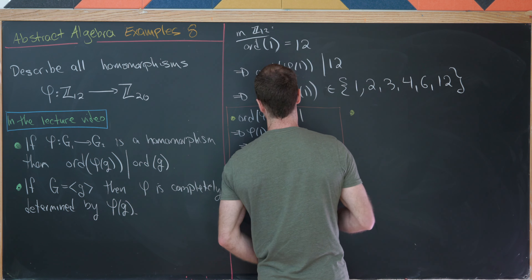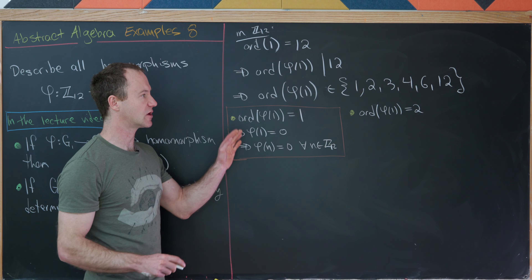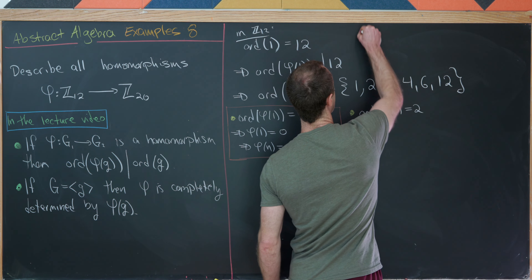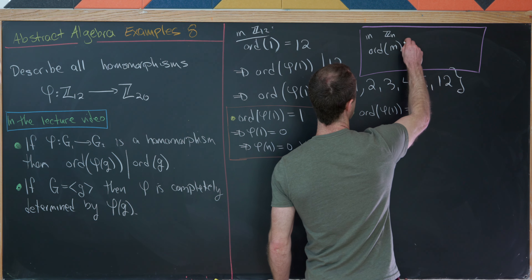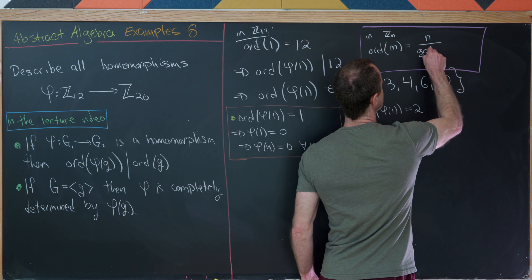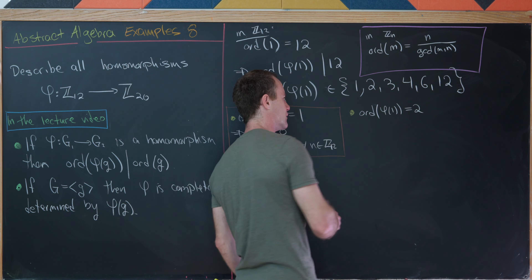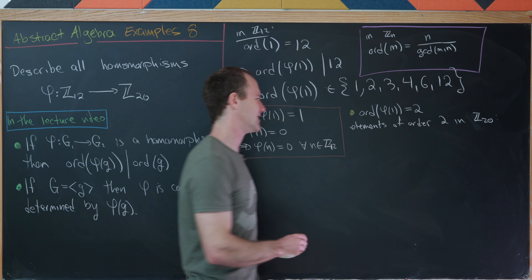Now let's look at the next case: what happens if the order of φ(1) equals 2. We need to look for elements of order 2 inside of Z20. Recall that in Zn, the order of the number m equals n divided by GCD(m, n). That means we can find elements of order 2 in Z20 using this formula. We'll only get one: the number 10, because 10 is the only element of Z20 whose GCD with 20 is equal to 10.